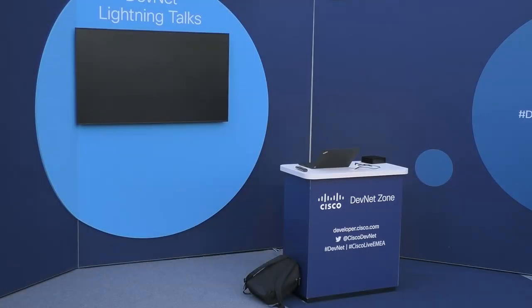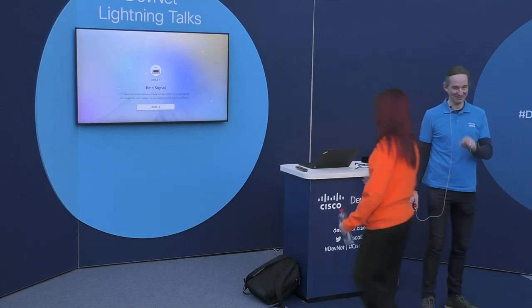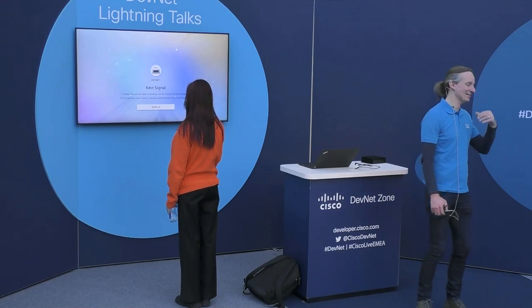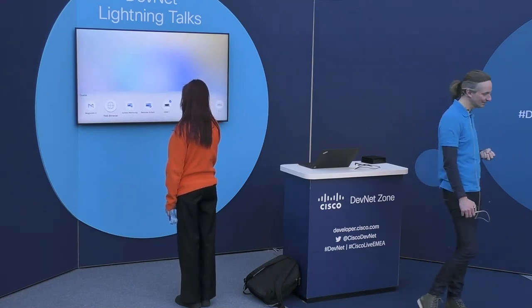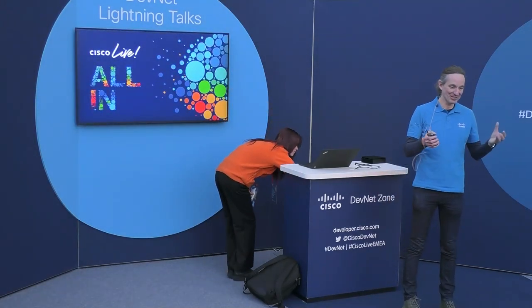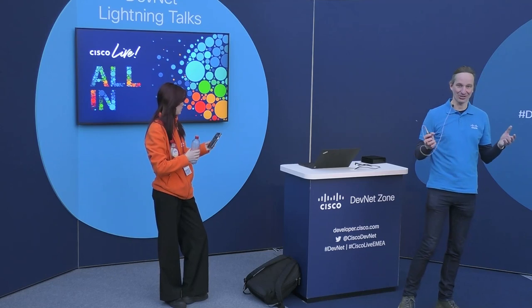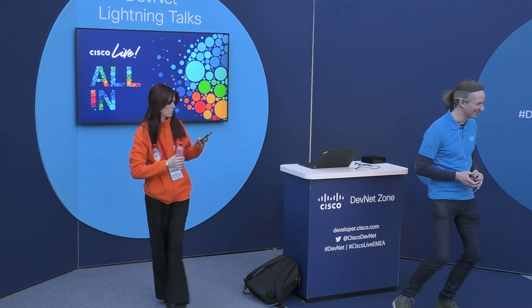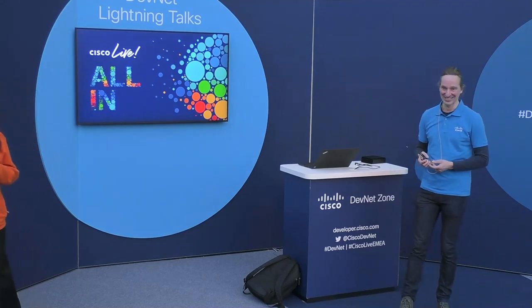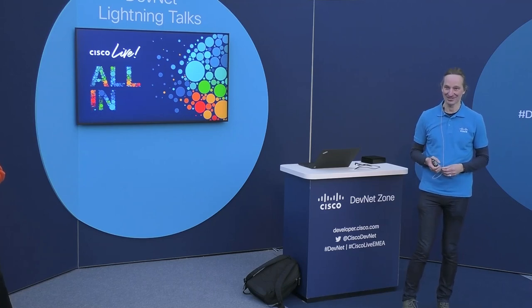Why is it called Great Bear? Originally the code name was Alcor — a star in the Great Bear, or Ursa Major, constellation. Some people didn't like the name Alcor because it sounded like 'chemical' or 'alcohol,' so we decided to broaden it from one star to the full constellation. We then switched from Ursa Major to Great Bear because it's more English. Right now it's a code name, so whether the product will ever officially be called Great Bear I doubt — it'll probably get some fancy Cisco Edge Application Platform name — but until then, I'm happy with the bear.